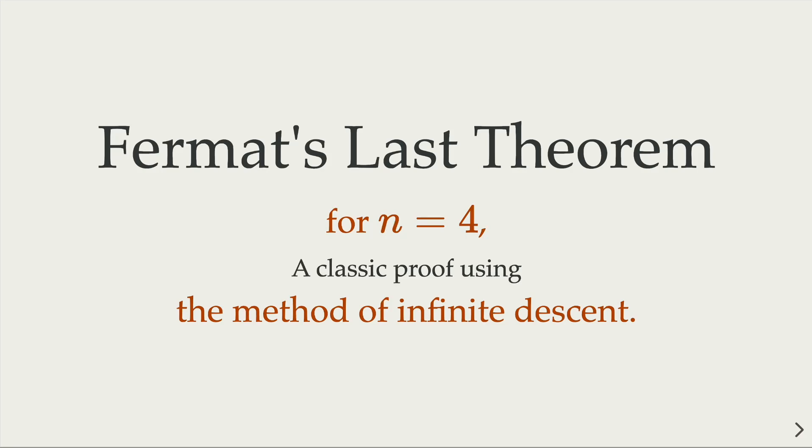Now the special case of Fermat's Last Theorem where n equals 4 has an elementary proof, and the proof is classic. It is the method of infinite descent.